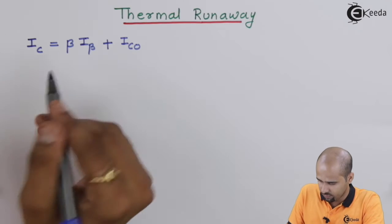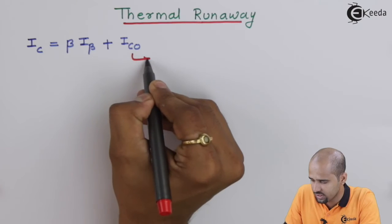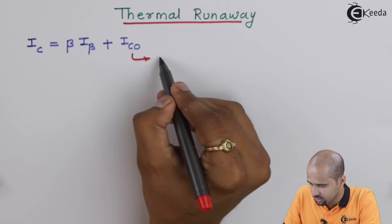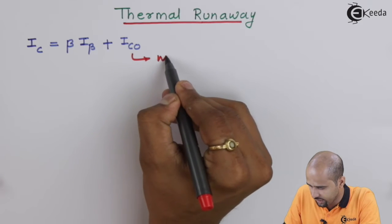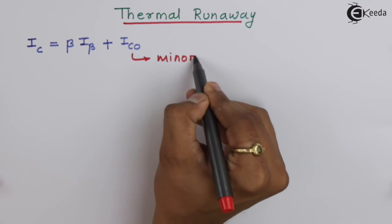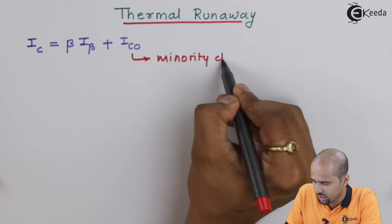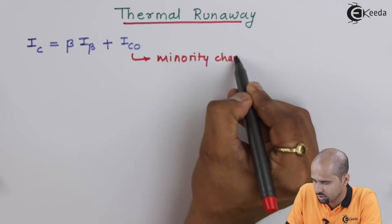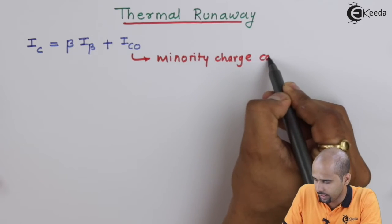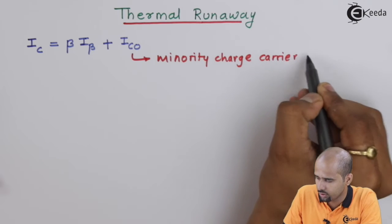Where Ico is termed as the minority charge carrier current.